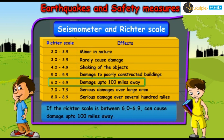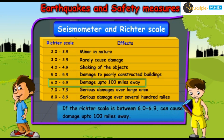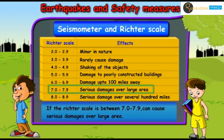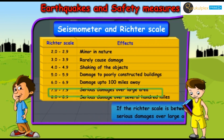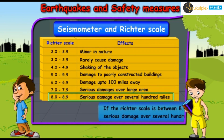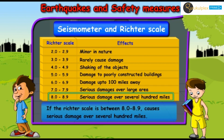If the Richter scale reads between 6.0 to 6.9, it can cause damage up to 100 miles away. If it reads between 7.0 to 7.9, it can cause serious damages over a large area. If it reads between 8.0 to 8.9, it causes serious damage over several hundred miles.